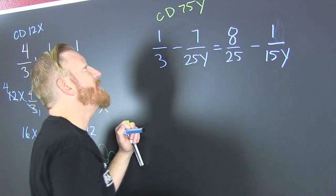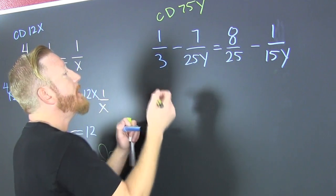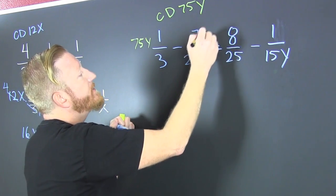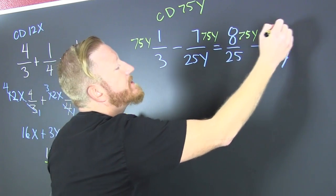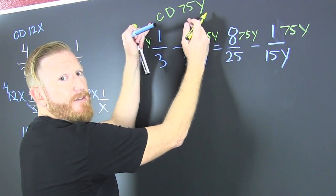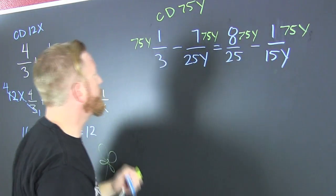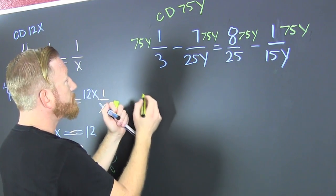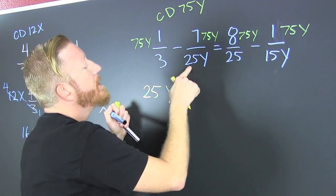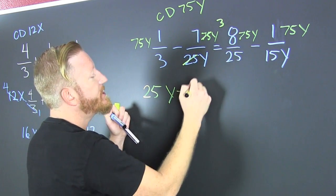There are y's in there too. Now we go and we multiply everything by 75 — every term — so we can clear those fractions. I'm really multiplying both sides by 75 and distributing in. Now we reduce: 75 divided by 3 is 25. Minus 75 divided by 25 — that's 3. And 3 times 7 is 21.